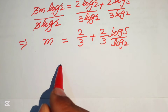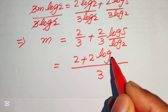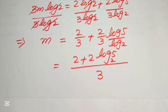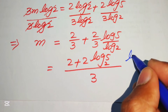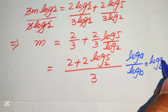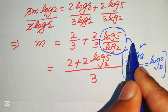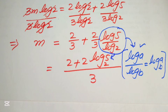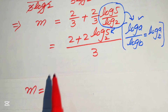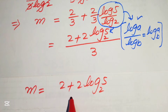We write this with a common denominator of 3, so the numerator becomes 2 plus 2 times log base 2 of 5. We apply the change of base property — log a divided by log b equals log base b of a — to write log 5 over log 2 as log base 2 of 5. Finally, m equals 2 plus 2 times log base 2 of 5, all divided by 3.